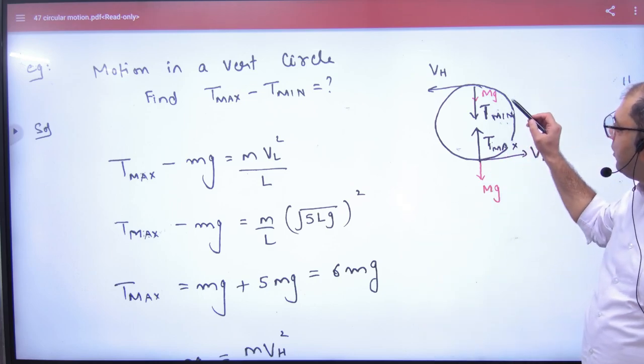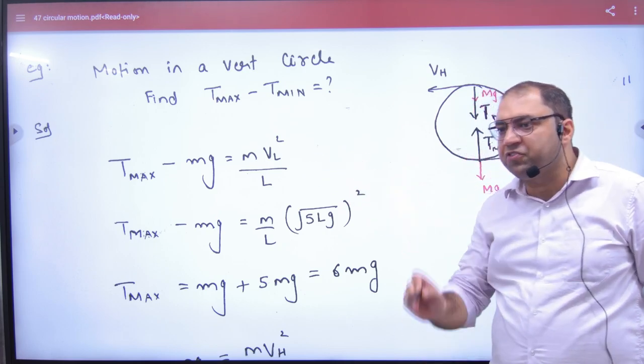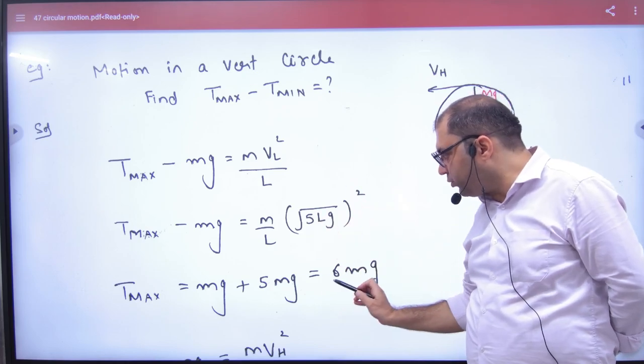Let me show you the equation at the lowest point: Tmax - mg = mvL²/L, and the minimum velocity is root 5gl. When solved, we get Tmax.